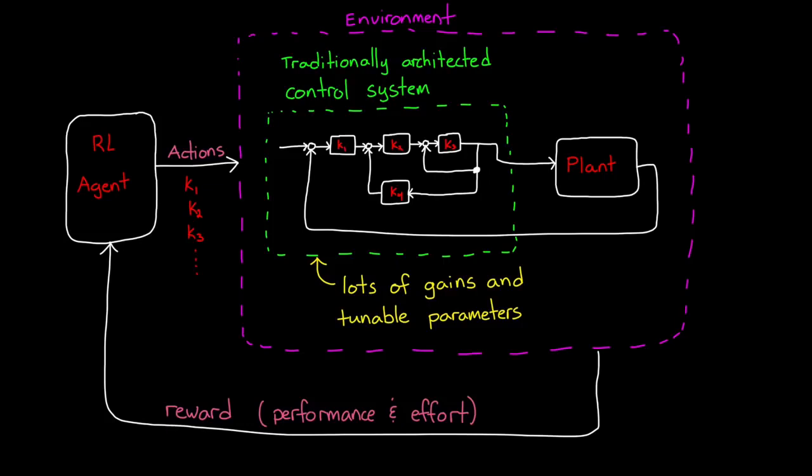So when you initially kick off training, the randomly initialized neural network in the agent would just generate some random values. And then you'd run the simulation using those for the control gains. Now, more than likely that first episode would produce some garbage result. But after each episode, the learning algorithm would tweak the neural network in a way that the gains move in the direction that increase reward. That is, it's improving performance and lowering effort.